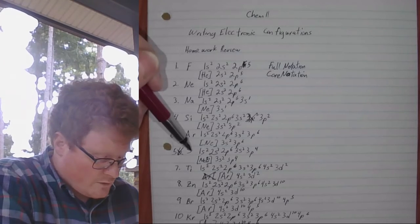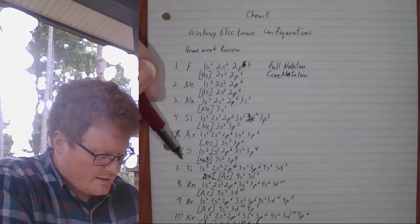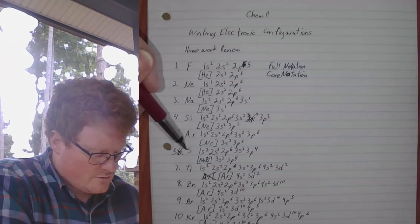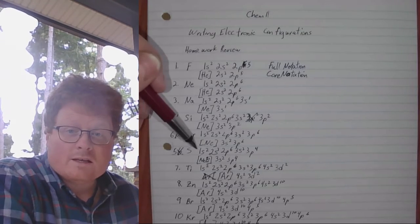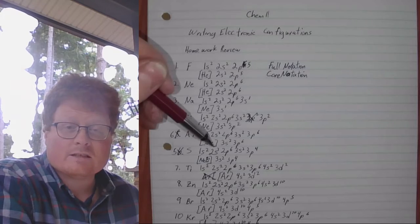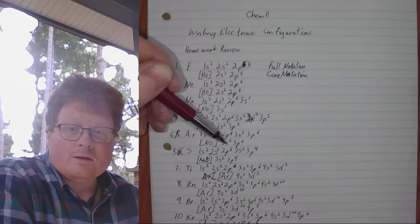Sulfur. We're in row three. Question five. Sulfur: 1S2, 2S2, 2P6, 3S2, 3P4.